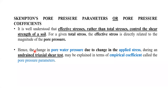The undrained triaxial test is also called the UU test — unconsolidated undrained test. In this test, the drainage valves are closed during both the consolidation stage and the shearing stage. Whenever stresses are applied, the change in pore water pressure takes place. Whether during the consolidation stage or shearing stage, the pore water pressure developed can be explained in terms of empirical coefficients called pore pressure parameters.